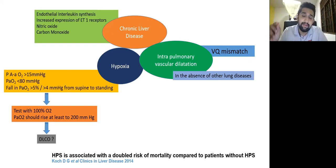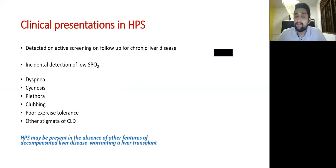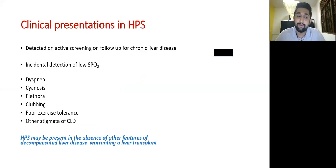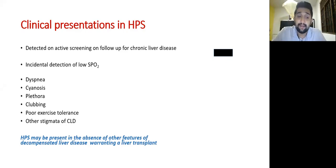Hepatopulmonary syndrome is usually detected on active screening during follow-up of chronic liver disease, and sometimes as an incidental finding. Clinical features, though not specific, are common. Dyspnea is the most common presentation, present in around 90 to 95 percent of patients. Cyanosis and platypnea occur in 80 to 90 percent, clubbing in around 60 percent, and there is poor exercise tolerance as well. Other stigmata of chronic liver disease may or may not be present.